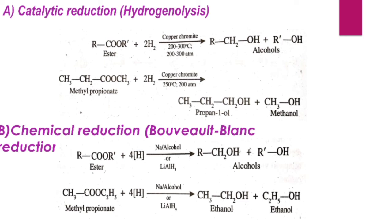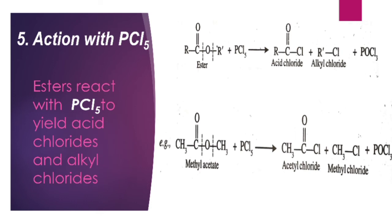In chemical reduction, methyl propionate is reduced to two molecules of ethanol by sodium and alcohol, or by lithium aluminum hydride (LiAlH₄). Any olefinic double bond present in the ester molecule does not get reduced when using sodium and alcohol or lithium aluminum hydride.